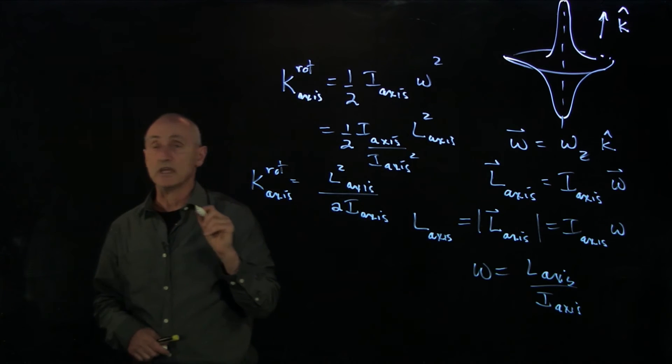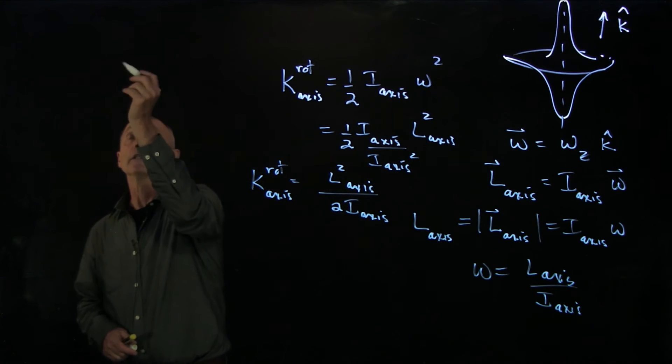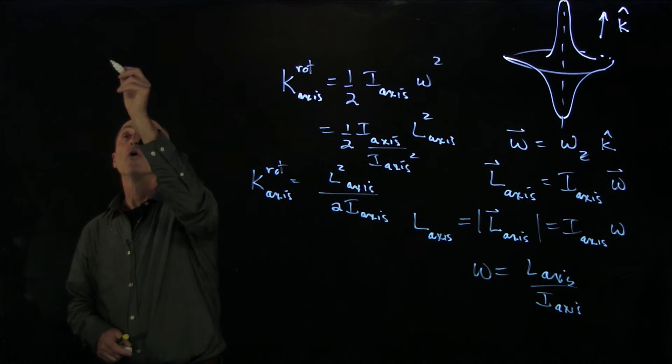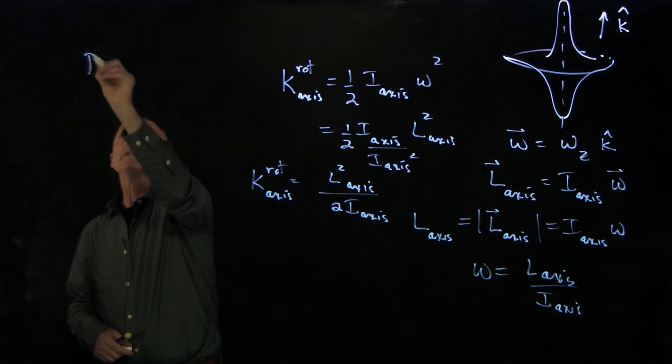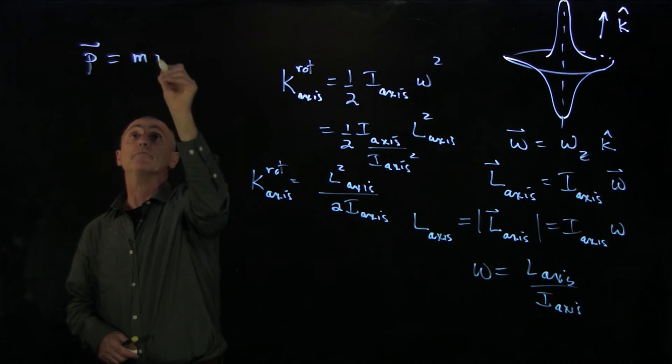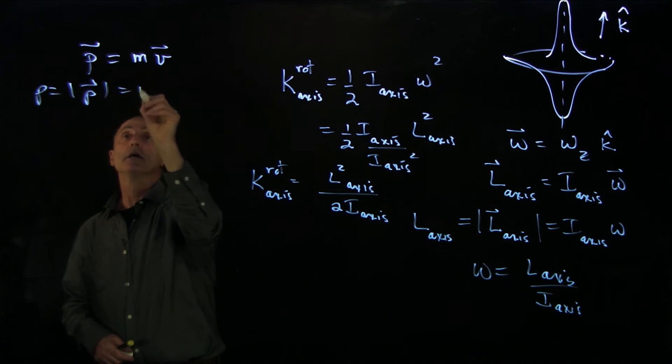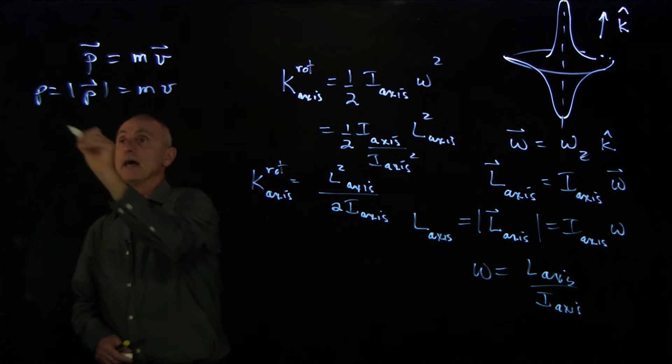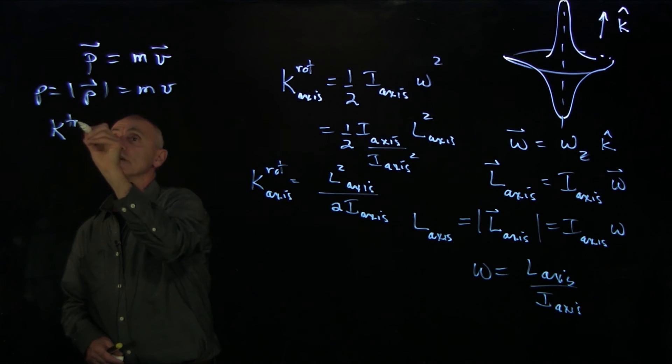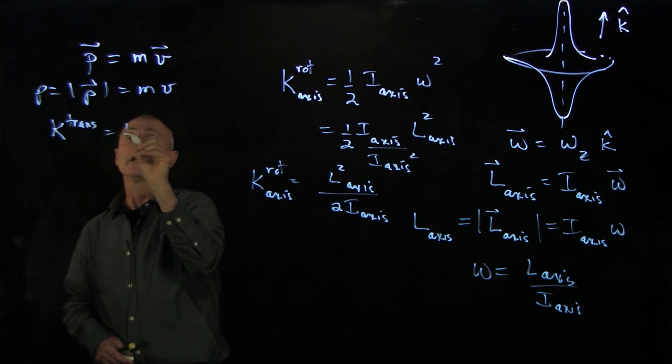It is nice to notice the linear analogy to this, when we wrote that the momentum of an object was mv. So the magnitude of the momentum is just m times v. And when we write kinetic energy translation as 1 half mv squared,